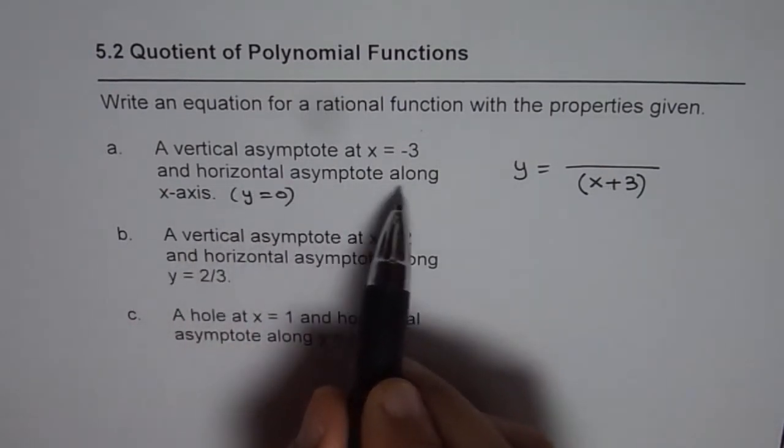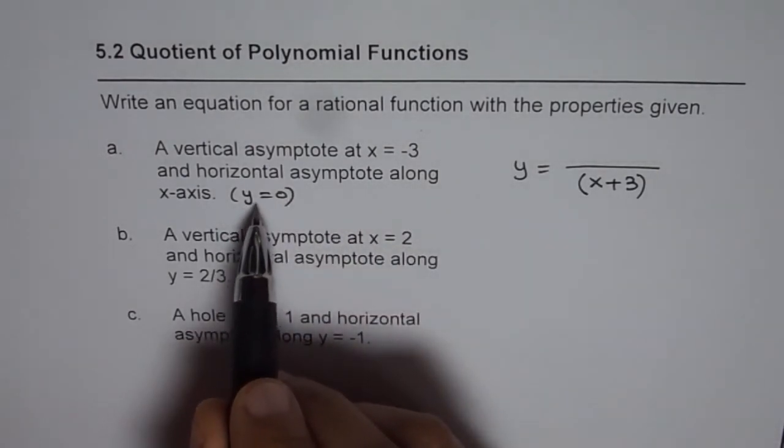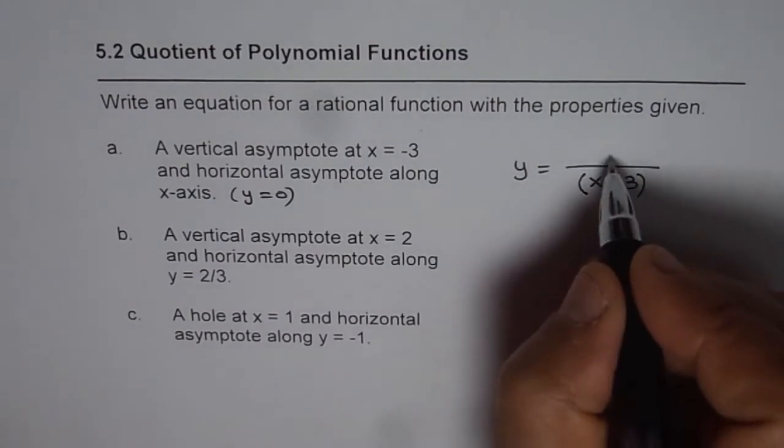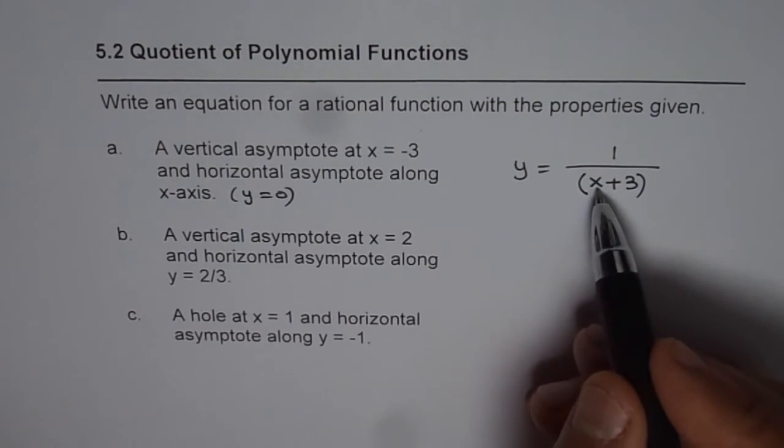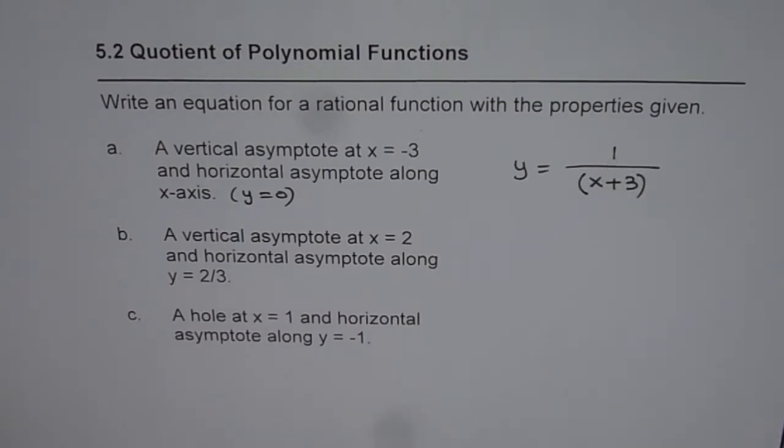Now it says horizontal asymptote along x-axis. So that means horizontal asymptote is y equals 0. Degree of numerator should be 1 less. So we can just write 1. So that is a constant. Degree of denominator is 1, degree of numerator is 0. So that is the correct equation.